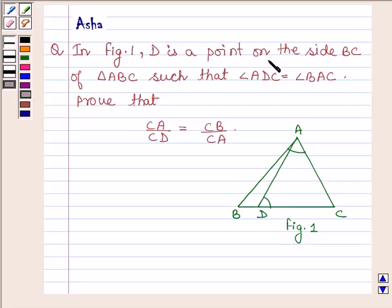D is a point on side BC of triangle ABC such that angle ADC equals angle BAC. Prove that CA divided by CD equals CB divided by CA.